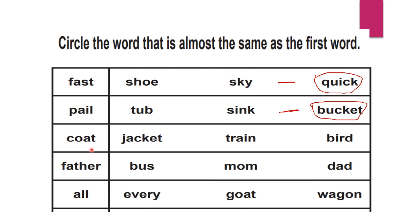Again, what is this? It's a coat. So for 'coat,' what will come? Another name for it is 'jacket.' Will 'train' come? No. 'Bird'? No. So the answer is 'jacket.' We will circle 'jacket' and give a hyphen here — coat means jacket.